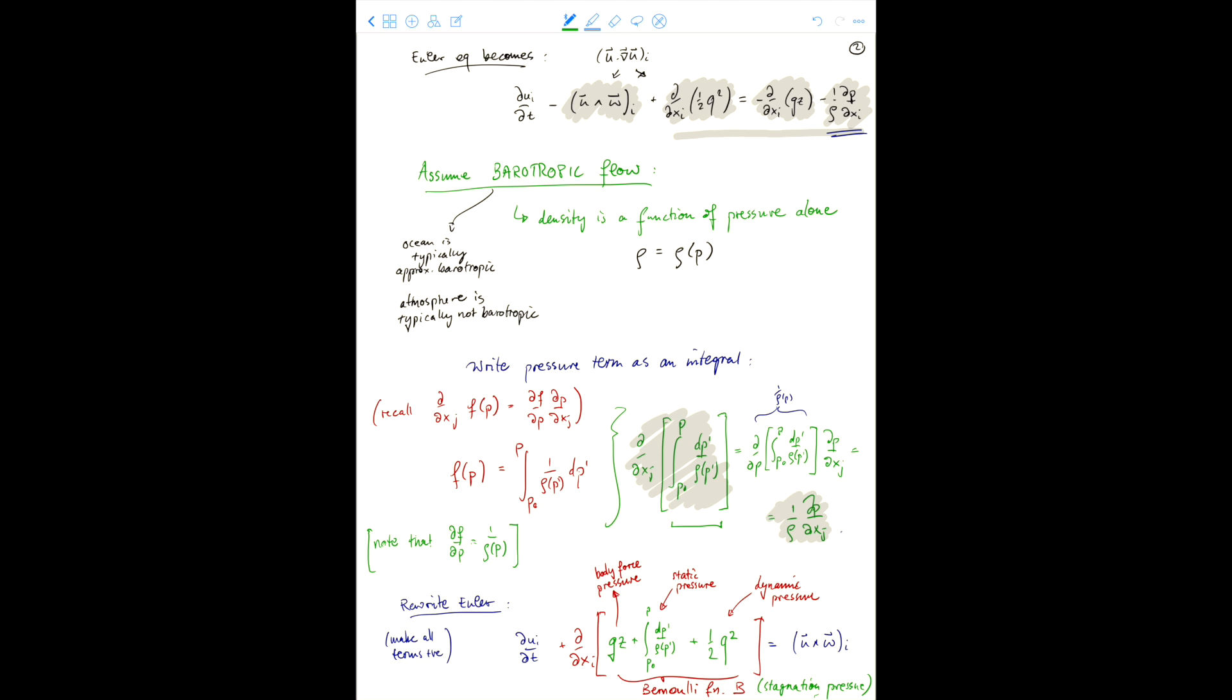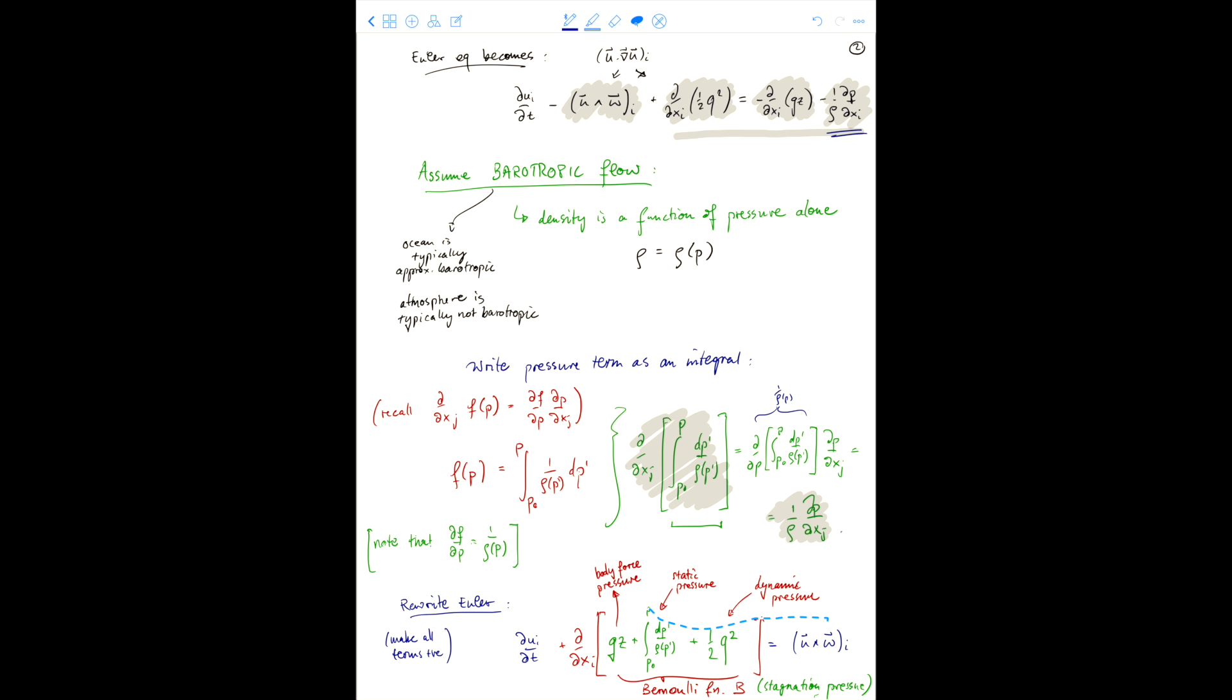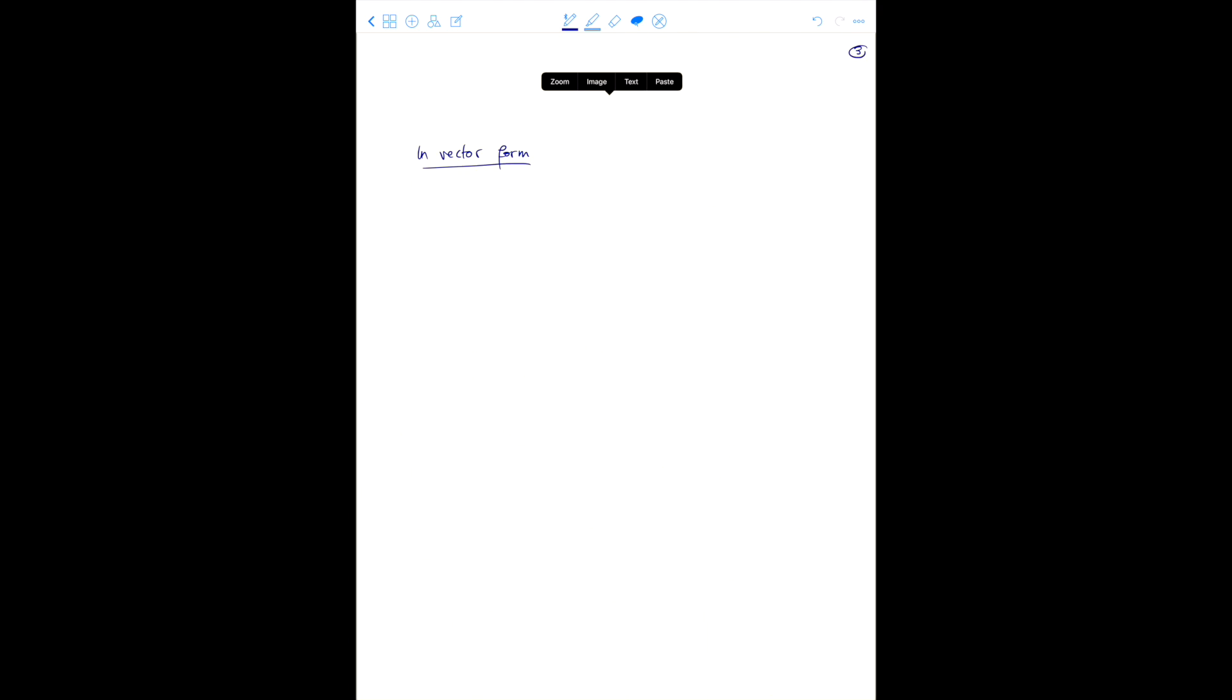And so we can rewrite this in vector form. And actually, let me just copy that once more. So in vector form, this is just b.